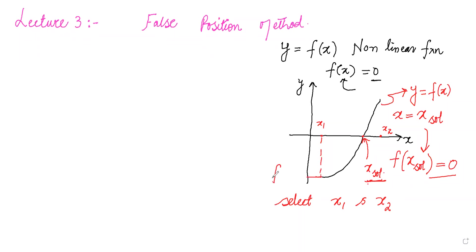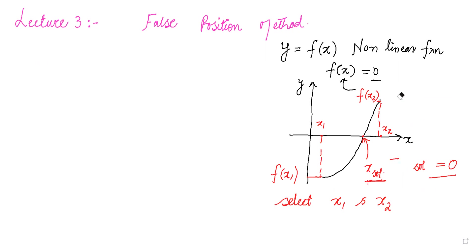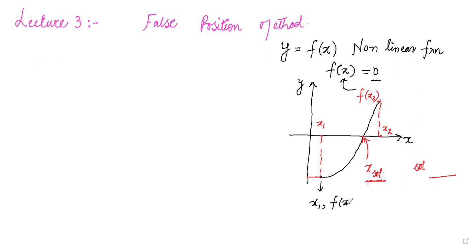At x1, the value of the function is f(x1), and at x2 the value of the function is f(x2). We write down the coordinates of these two points. The coordinates of the first point are (x1, f(x1)), and the coordinates of the second point are (x2, f(x2)).